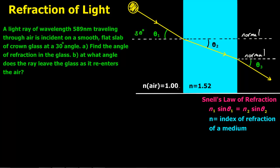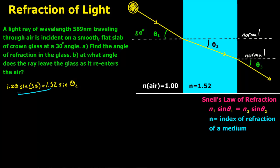To set this problem up, we say N1 of air, which is 1.00, times sine theta 1 — and we know theta 1 is 30 degrees — equals N2, which for crown glass is 1.52, times sine theta 2.